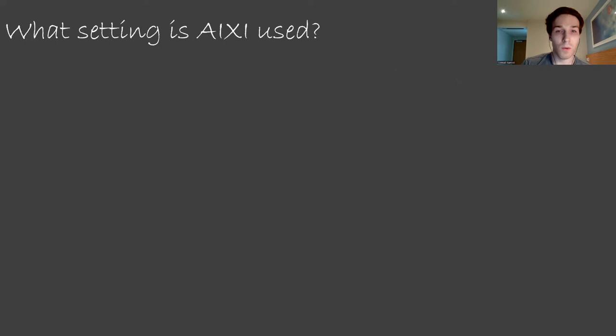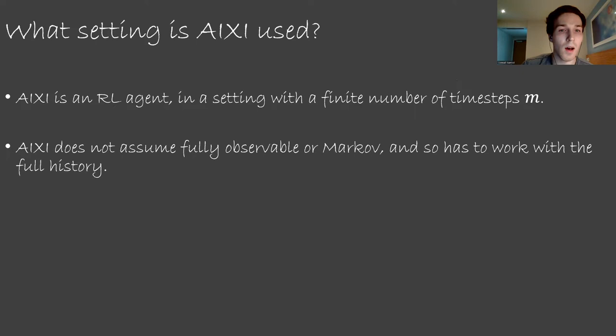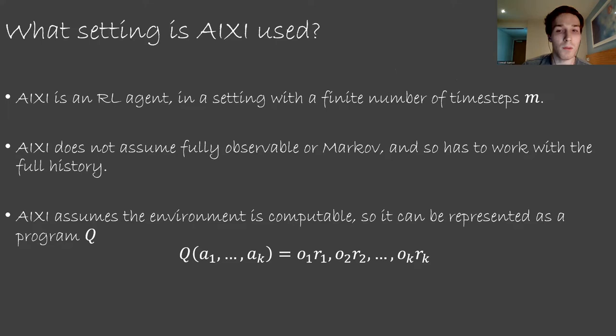With Kolmogorov complexity and Occam's Razor out of the way, we can talk about ICSI agents. ICSI is an agent that exists in the reinforcement learning setting, usually the finite reinforcement learning setting. Like most reinforcement learning agents, it tries to maximize its cumulative reward. ICSI, unlike in Markov decision processes, does not assume fully observable or Markov of the environment. ICSI works with the full history when making decisions: every observation, reward, and action that is seen or taken.